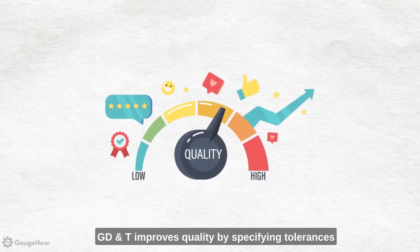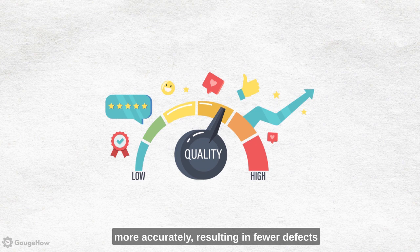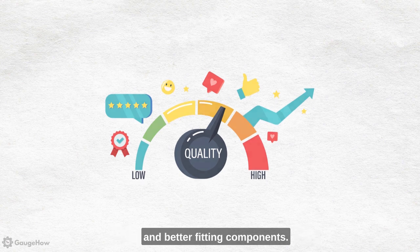GD&T improves quality by specifying tolerances more accurately, resulting in fewer defects and better fitting components.